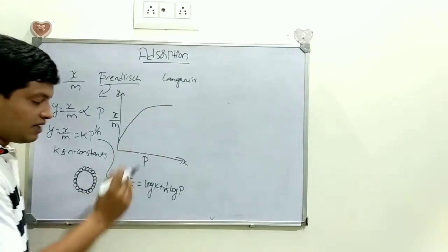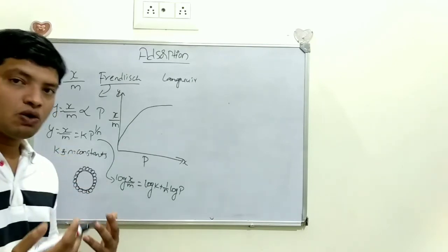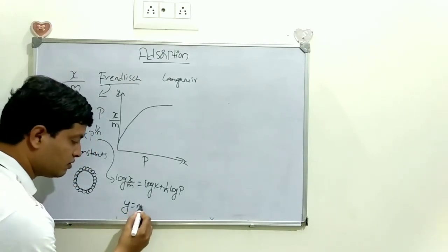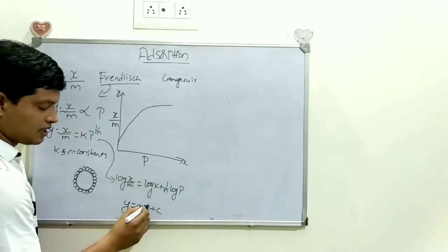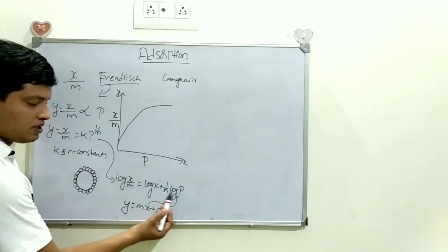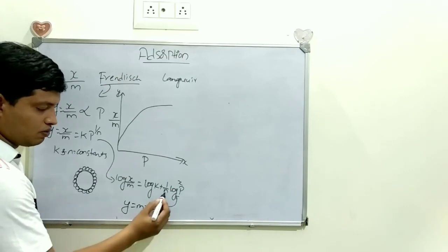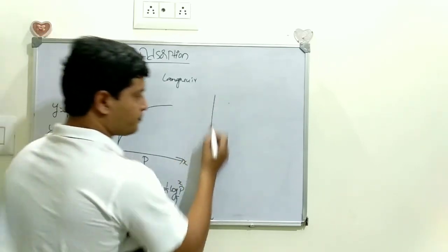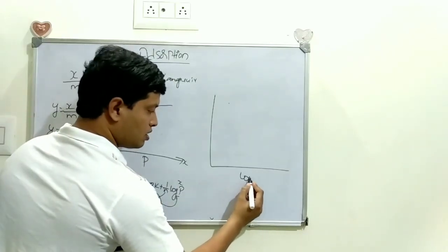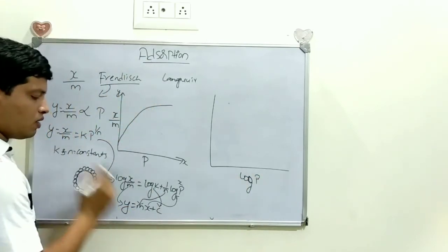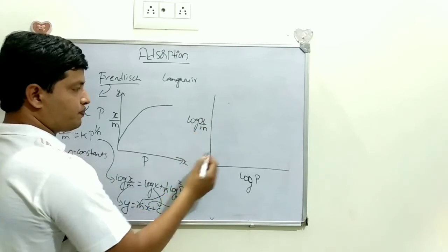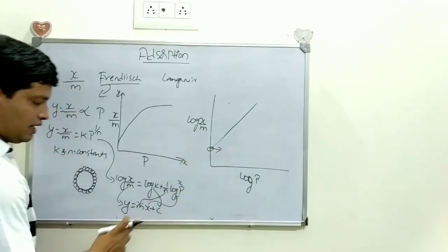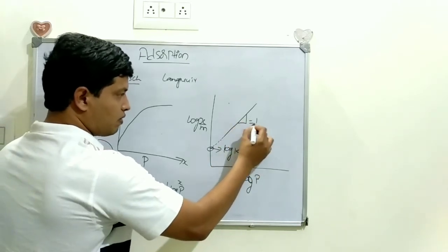Now to draw the graph using this equation, we compare it to y = mx + c. The known quantity log P goes on the x-axis; log(x/m) goes on the y-axis. The slope is 1/n, and the intercept on the y-axis — when the graph is extrapolated — is log k.